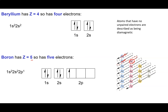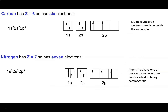Our next subshell is 2p. Boron has five electrons: 1s² 2s² 2p¹ — the 2p subshell has three orbitals and the first electron goes in spin up. Carbon has six electrons: 1s² 2s² 2p², and that extra electron goes into the next empty 2p orbital, also spin up. From here it gets repetitive as we fill up the p subshell through to neon.